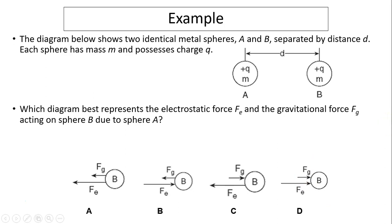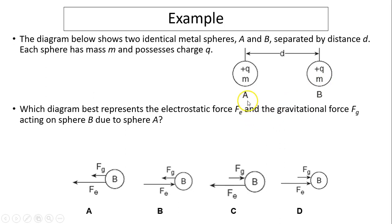The diagram below shows two identical metal spheres A and B separated by distance D. Each sphere has mass M and possesses a positive charge Q. Which diagram represents the electric force and gravitational force on sphere B due to A? Electric force should be going to the right because the charges are the same and electric force is repulsive. Gravitational force is attractive, so it should be going to the left. The answer is B.